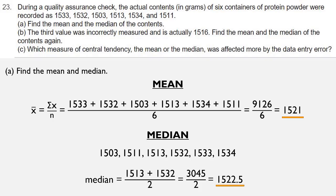That's part A. In part B, we're told that the third value was incorrectly measured. That would be the 1503, and it was actually supposed to be 1516. So we're going to go ahead and redo this problem, changing the 1503 to a 1516.